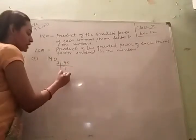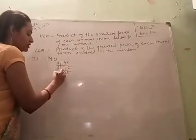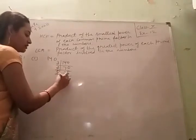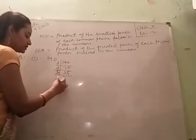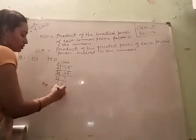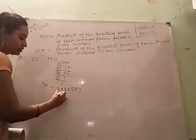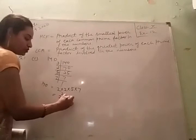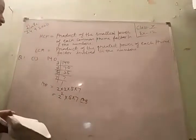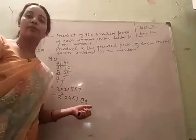Divide 140 by 2: 2 × 70. Then 2 × 35. Then divide by 5: 5 × 7. Then 7 × 1. So 140 written as a product of prime factors is 2 × 2 × 5 × 7, which is 2² × 5 × 7. This is the expression of 140 as a product of prime factors. All the remaining numbers are prime numbers.